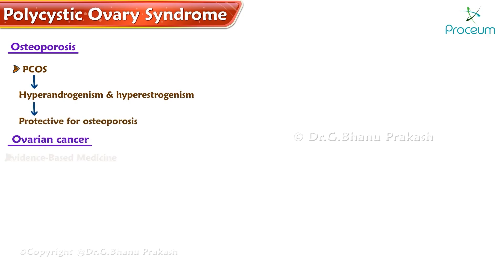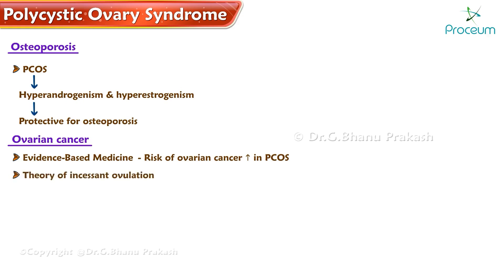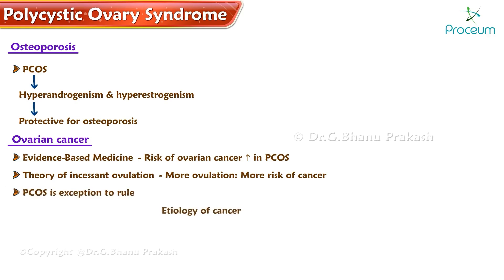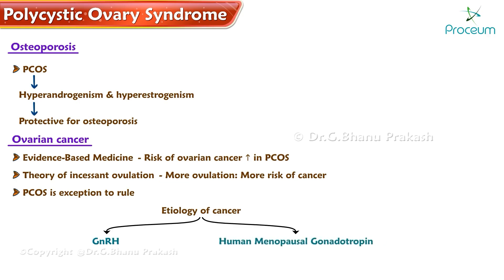Evidence-based medicine shows that the risk of ovarian cancer is increased in polycystic ovary syndrome. The theory of incessant ovulation states that more ovulation means more risk of cancer. However, PCOS is an exception to this rule because the etiology of cancer in PCOS is due to the use of gonadotropin-releasing hormone, human menopausal gonadotropin, etc., for ovulation induction.